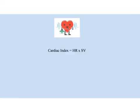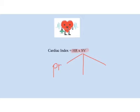Now that we've gone through the lung portion of the equation, let's briefly go through the cardiac portion. This is a little more straightforward, as what we're really looking at with a cardiac index is our cardiac output, which is made up of our heart rate and our stroke volume. We have to go a little further into stroke volume, and we know that it's made up of three separate factors: preload, afterload, and contractility.